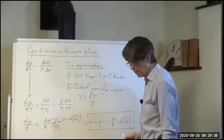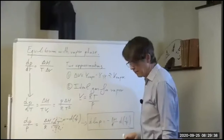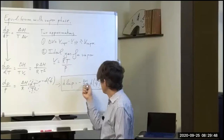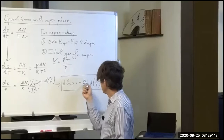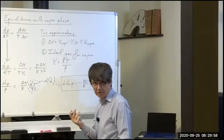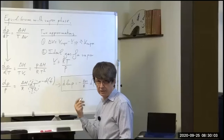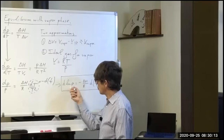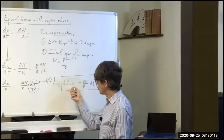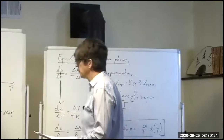The Clausius-Clapeyron equation is simpler because I now have an equation for the phase boundary in terms of only one property difference — ΔH — instead of two. The latent heat is usually tabulated and easy to measure. So if we can measure the latent heat at one condition (one pair of pressure and temperature), we have a good way of extrapolating the equilibrium into other domains.